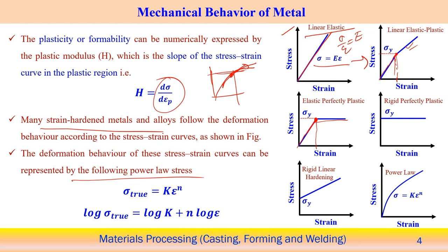Similarly, we can say this is the rigid and perfectly plastic material. This particular behavior does not have any kind of elastic deformation. With the application of load it starts from the yielding point — even for zero strain theoretically, yielding starts and the yield stress remains constant over the deformation. That is why it is called perfectly plastic, and since there is no elastic deformation zone, we can say the material behavior is rigid, perfectly plastic.